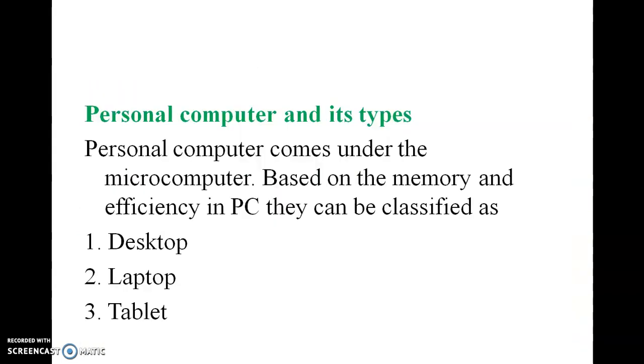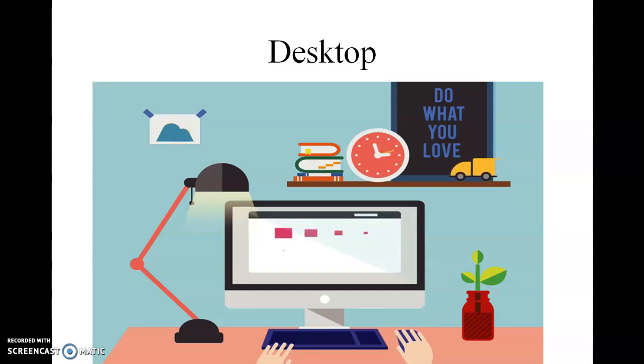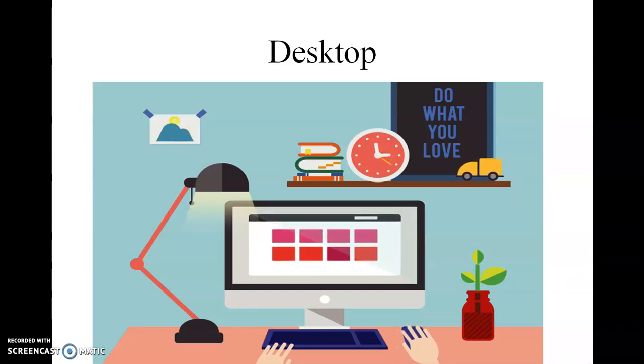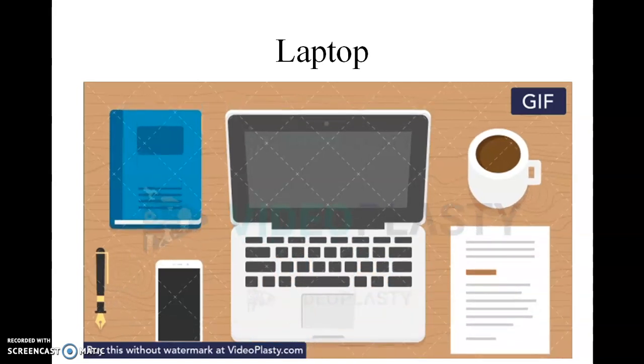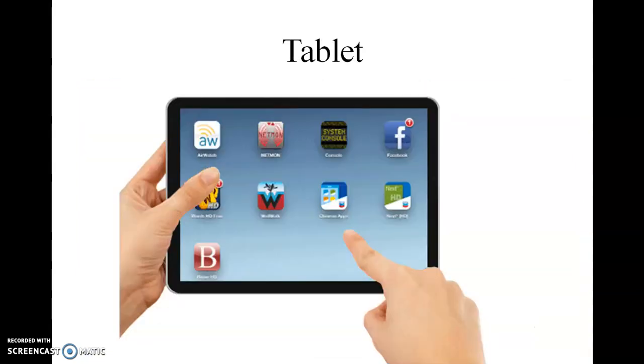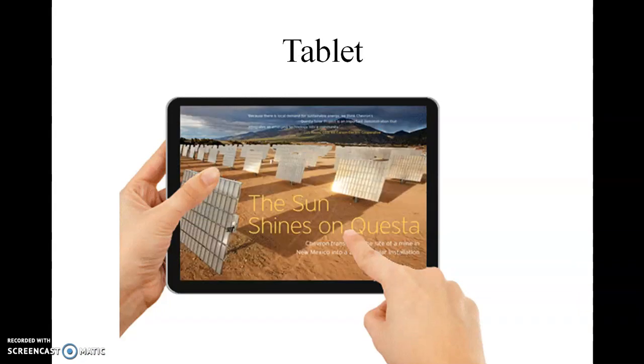Personal computer and its types. Personal computers have three types: desktop, laptop, and tablet. Desktop is used on the desktop or table. Laptop - most people nowadays are using laptops. There are no extra devices for memory. Tablet is somewhat bigger than a cell phone with some memory and speed.